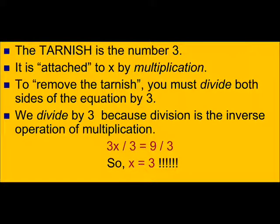The tarnish, on the other hand, is the number 3, which is attached to x by multiplication. To remove the tarnish, you've got to divide both sides of the equation by 3. Because division is the inverse operation, or opposite, of multiplication. 3x divided by 3 equals 9 divided by 3. So, x now equals 3. And the equation is solved.